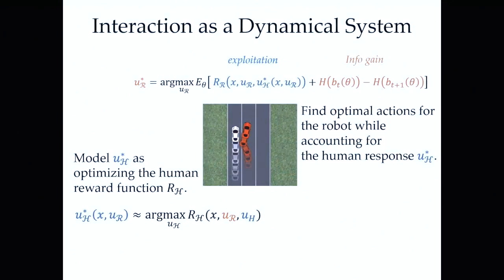Along those lines, we think we should have an online learning approach that updates its models as it goes. As I'm trying to achieve my task as an autonomous car, maybe I should be curious about the humans around me — encoding that curiosity and information gain in my formulation about how other drivers drive. By encoding that, what happens is our autonomous cars take actions similar to nudging in. They start nudging in to see how the other drivers respond, and based on that, they decide what to do next. This emergent behavior was just out of the optimization — nothing was hand-coded. By encoding curiosity into our formulation, we can see these interesting behaviors.